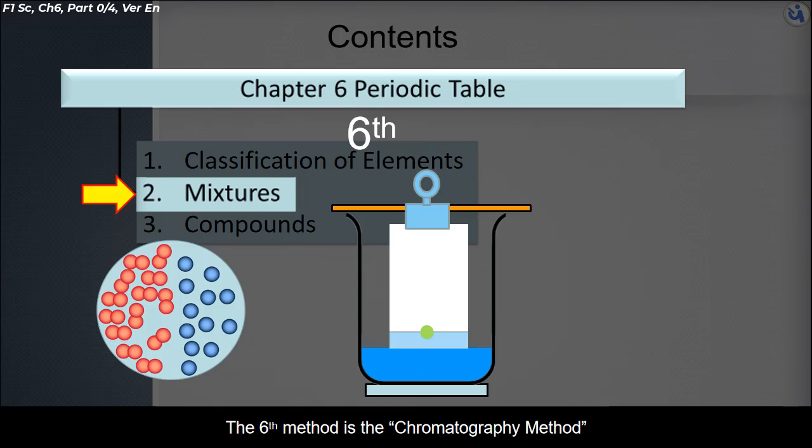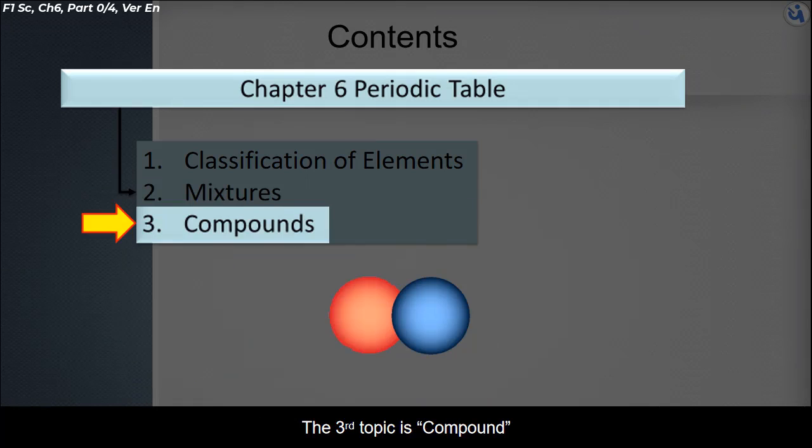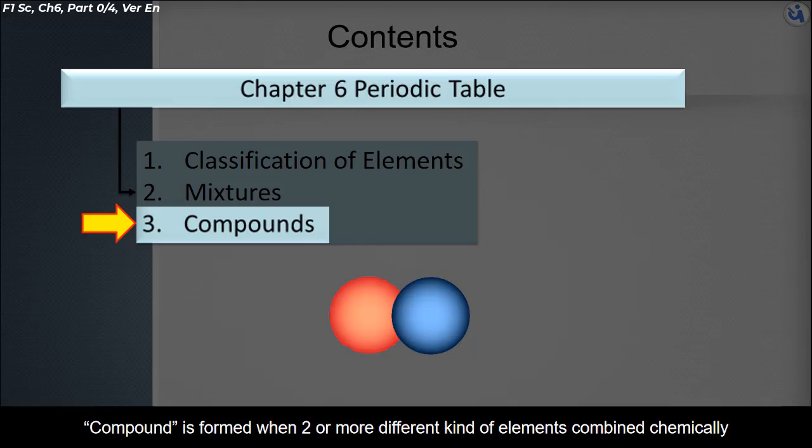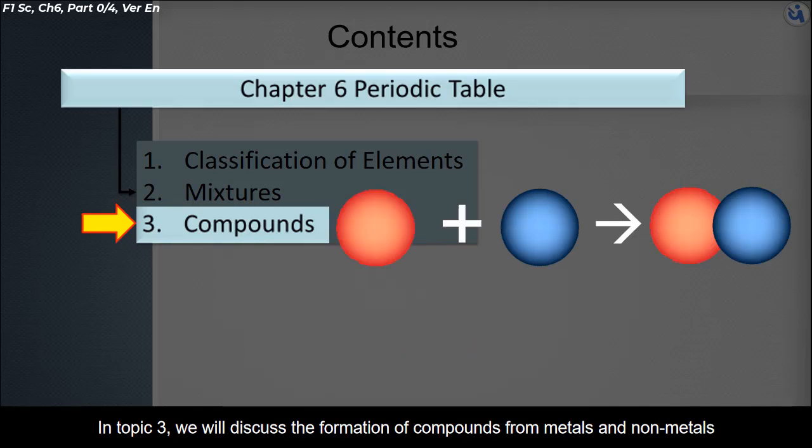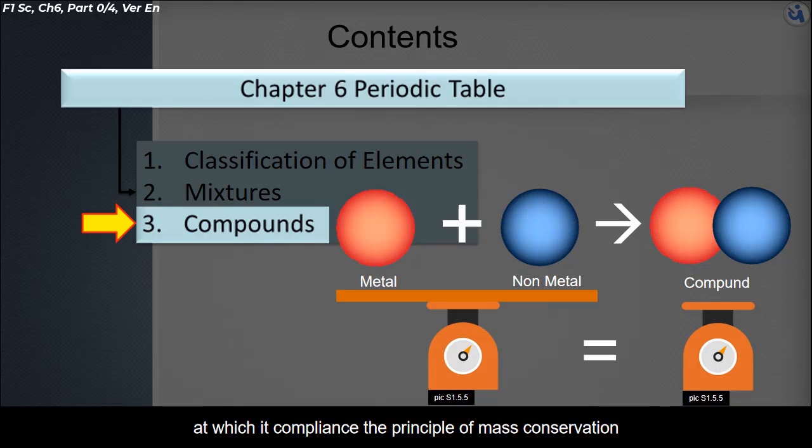The third topic is compound. Compound is formed when two or more different kinds of elements combined chemically. In topic three, we will discuss the formation of compounds from metals and nonmetals, which complies with the principle of mass conservation.